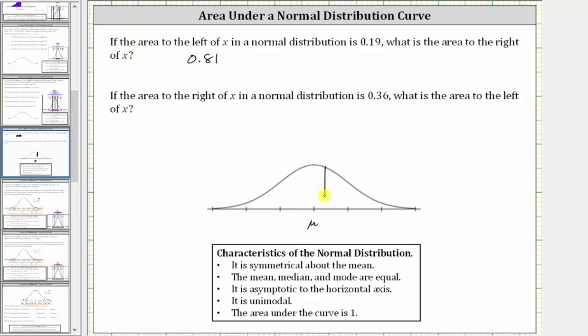Let's say x is approximately here. We're told the area to the right is 0.36, and therefore the area to the left, this blue area, must be equal to one minus 0.36, which is equal to 0.64. I hope you found this helpful.